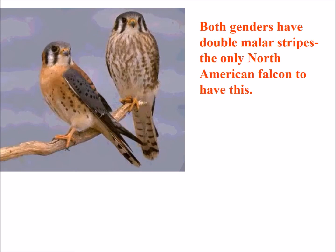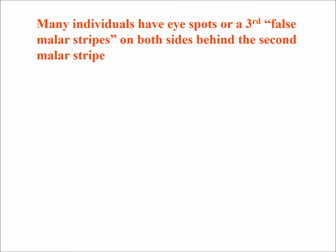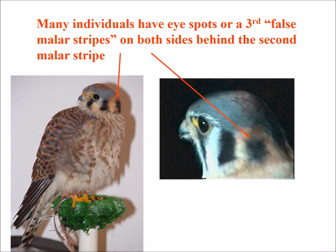Both genders have double malar stripes. They're the only North American falcons to have this. That second malar stripe is unique to kestrels, while the front malar stripe is something basically all falcons have. Many individuals also have eye spots, or third or false malar stripes. We can see that right here on this female American kestrel — that is again a unique thing to American kestrels. You can also see it on this individual where it sort of looks like an eye spot, with one on each side, so from behind it sort of resembles eye spots.